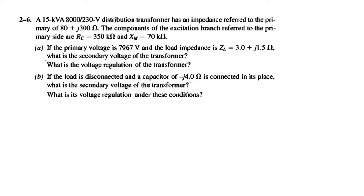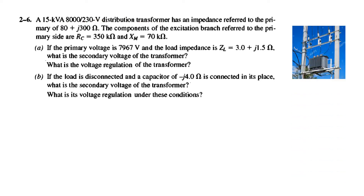Now let us read and try to understand the question. We have a 15 kVA, 8000/230V distribution transformer — the transformer that is used to supply voltage to our residences. One side is 230V and the high side is 8,000 volts. This transformer has an impedance referred to the primary of 8 + j30. We will see in the diagram what this means. The components of the excitation branch referred to the primary side are also given.